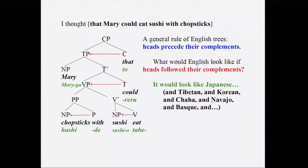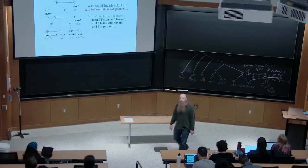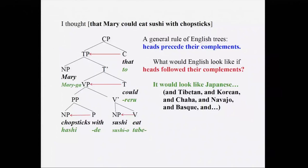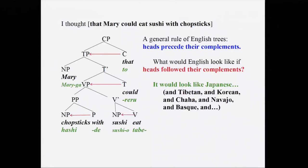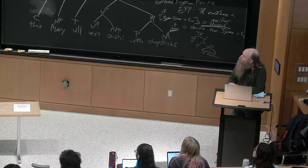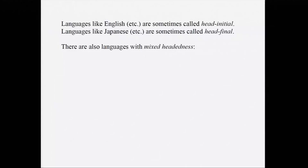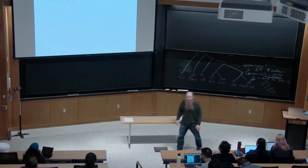What would English look like if heads followed their complements? You'd get word orders like 'Mary chopsticks with sushi eat could that' — which is not English but is Japanese. In Japanese, 'that Mary could eat sushi with chopsticks' is literally something like 'Mary chopsticks with sushi eat could.' This is also the basic word order for Tibetan, Korean, Navajo, Basque, and many other languages — cross-linguistically it may be the most common word order.